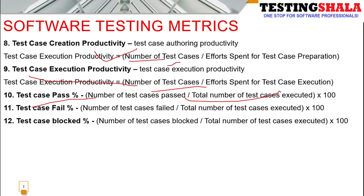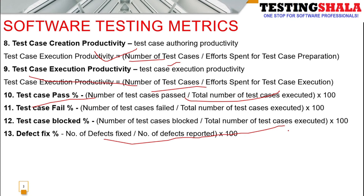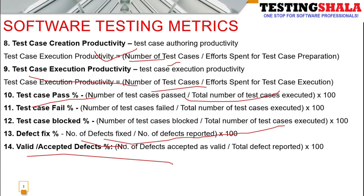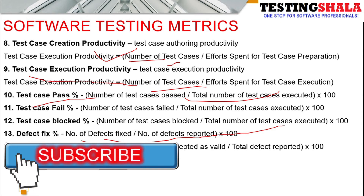The percentage of blocked test cases uses the same formula: number of test cases blocked divided by total number of test cases executed — giving the blocked test case metric. The thirteenth metric is defect fix: total number of defects fixed by developers divided by total number of defects reported in the defect management tool, giving the percentage of defects fixed.